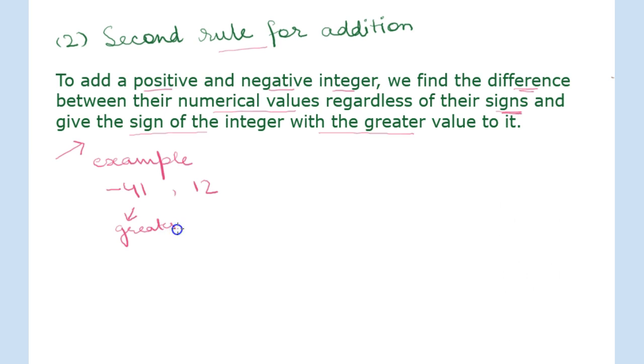According to the rule, we will find the difference here and the final sign carried with the answer will be of the integer with greater value. So here the answer is -29 since the sign of the integer with greater value is negative.